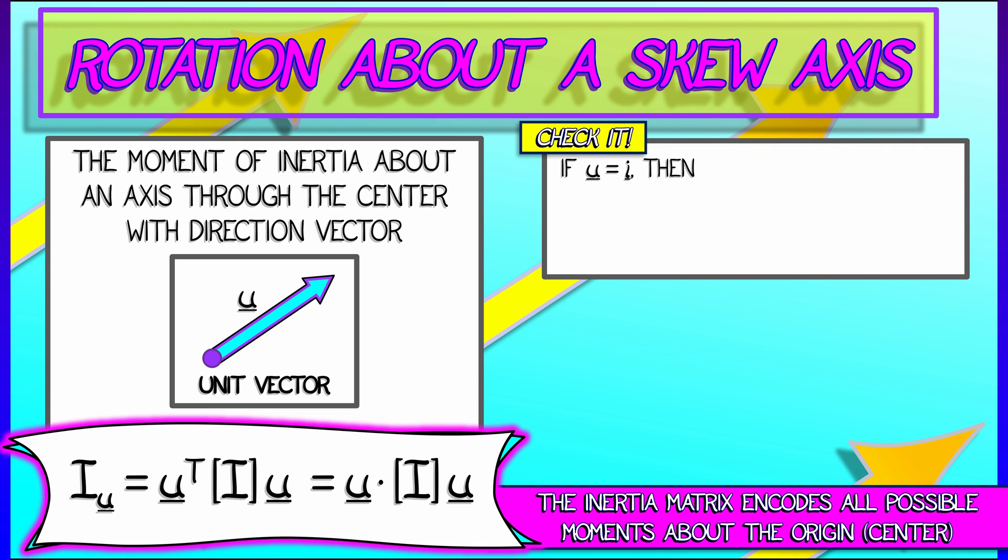But let's think, right? If I chose u to be the i vector pointing along the x-axis, then i_u according to this formula is just i_x_x, the moment about the x-axis. Of course, that quadratic form is pulling out that upper left-hand term. Okay, so that makes sense.